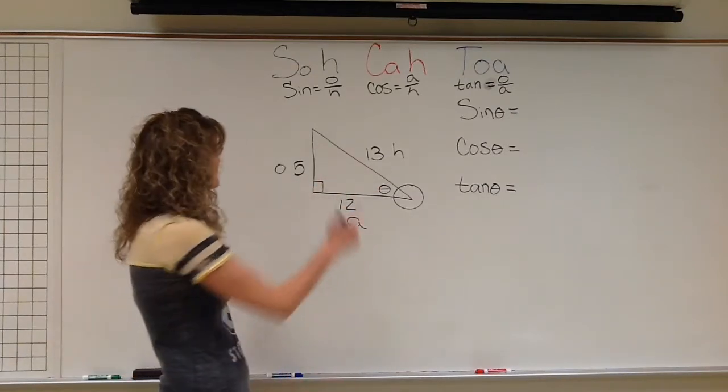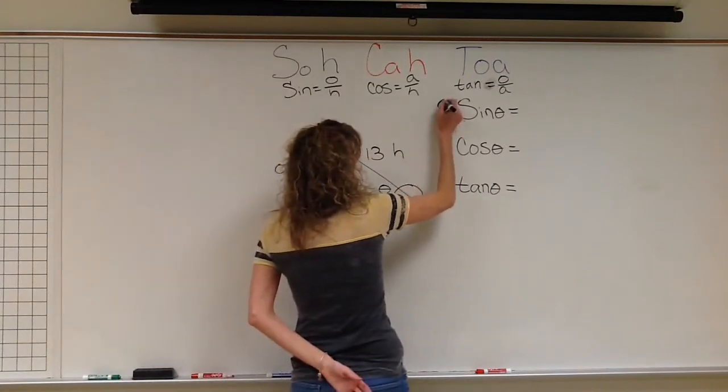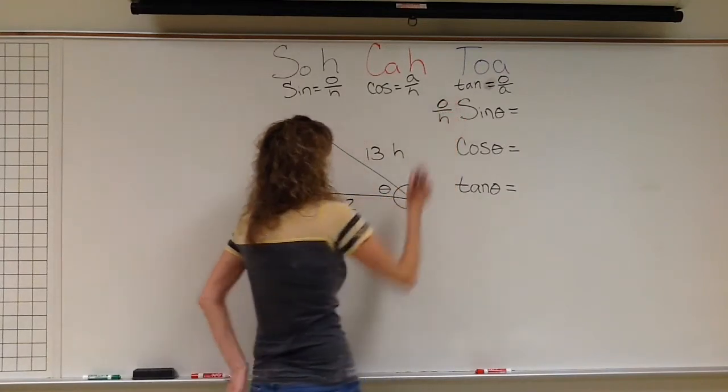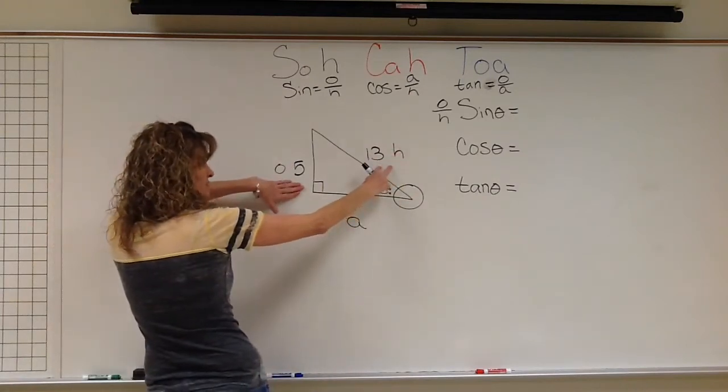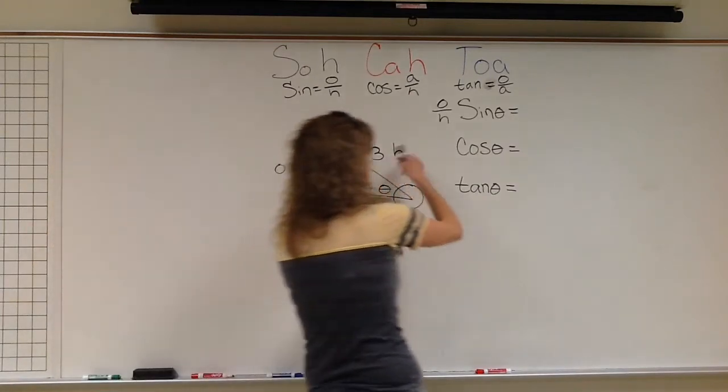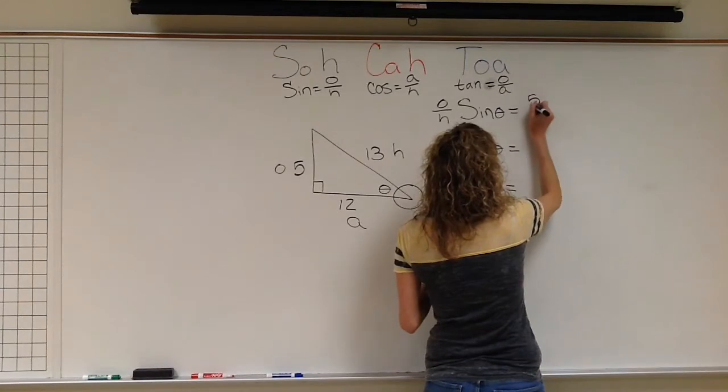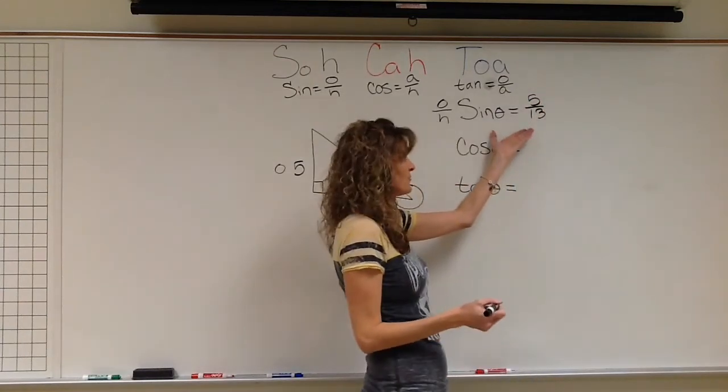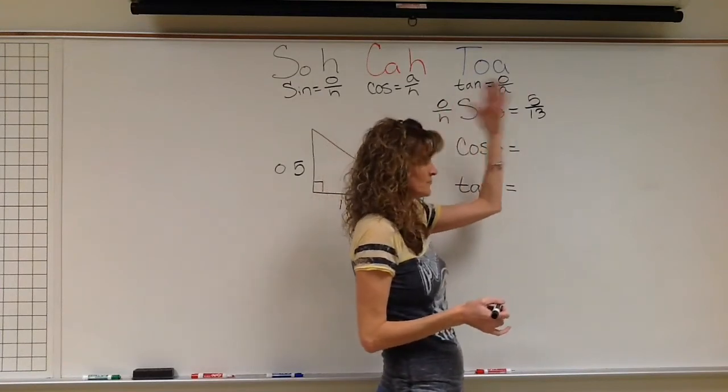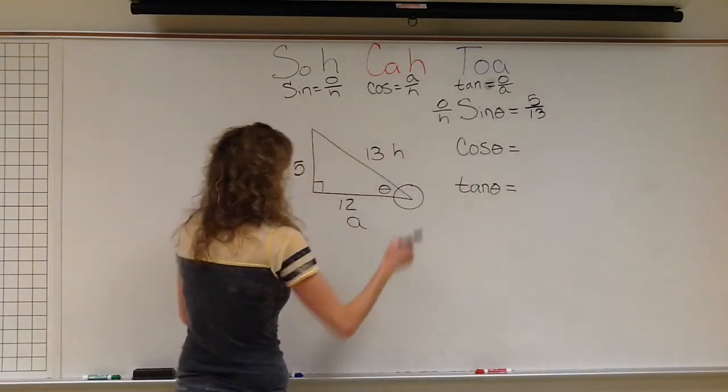All right. So I'm going to start with sine. I know that my sine ratio is going to be the opposite side over the hypotenuse. So I'm going to come over here. The opposite is 5. The hypotenuse is 13. So the ratio is going to be 5 thirteenths. And that fraction does not reduce. But if it did reduce, I would want to reduce it for my final answer.